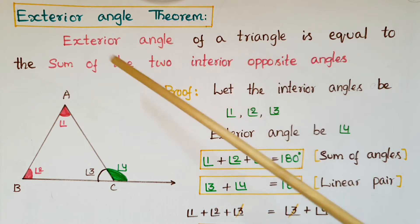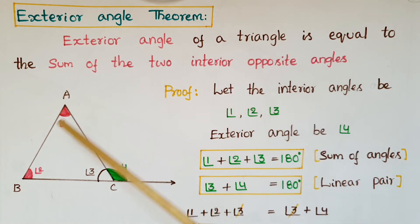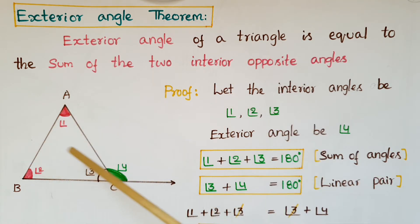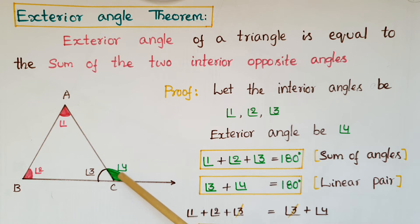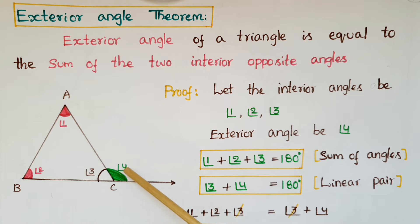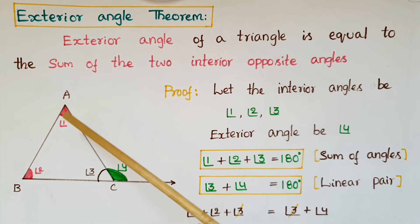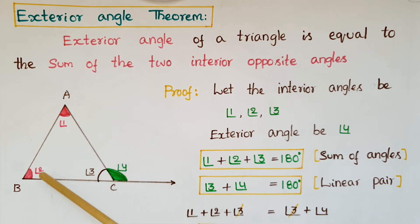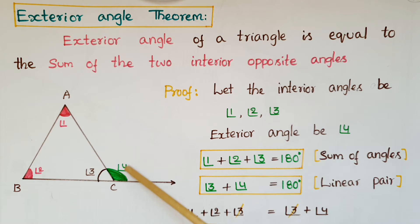Let us assume the interior angles of the triangle are angle 1, angle 2, and angle 3. Here, the exterior angle formed when we produce side BC is angle 4. We have to prove that angle 4 is equal to angle 1 plus angle 2, which are the two interior opposite angles of angle 4.